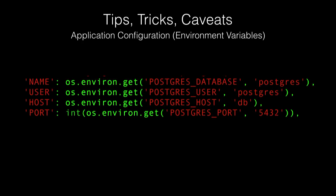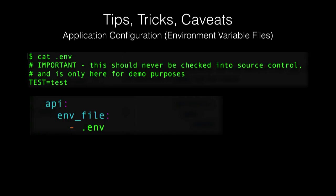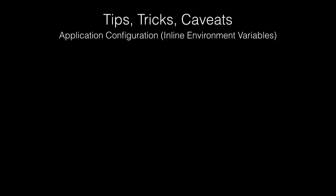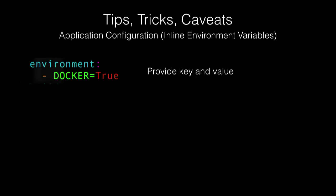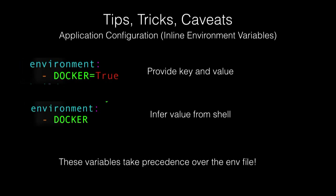For application configuration: you're used to using files for config, but in Docker the idea is that you have an image you can use anywhere — dev, prod, whatever. So we want to use environment variables, which is what we're doing in our settings.py to connect to the database. Here's our .env file with a variable name TEST and value test. We specify it in the Docker Compose file and when we bring it up, we get it. We can also do inline environment variables — provide the key and value, or just the key and the value will be inferred from your shell. These inline variables take precedence over the .env file, so you can use them to override defaults.